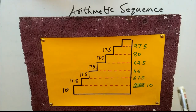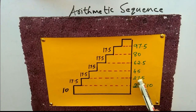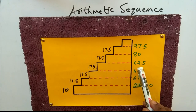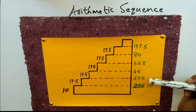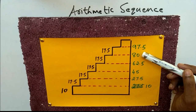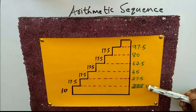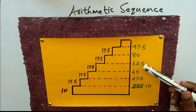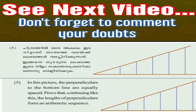This is a sequence that we will talk about. Now we do the same thing. The common difference is 17.5. Now we can add the sequence. Thank you for joining us and we'll see you in the next video.